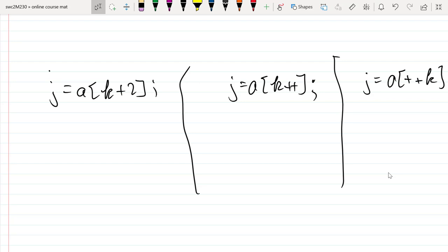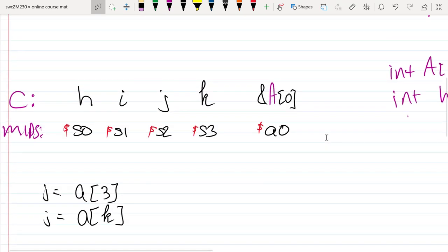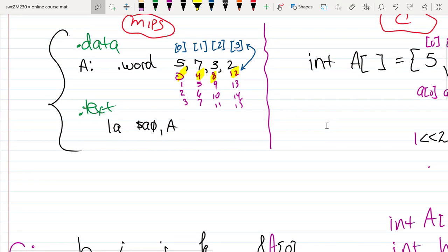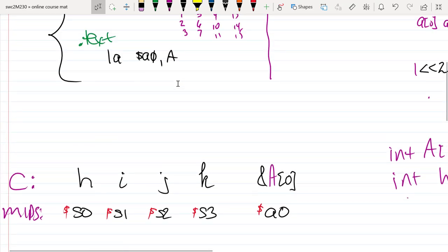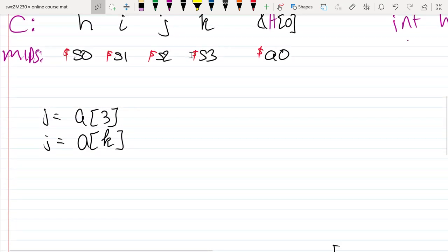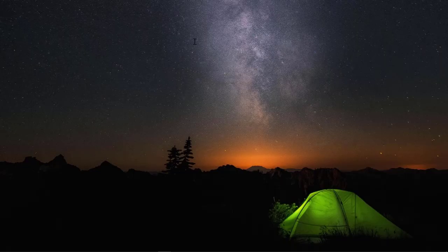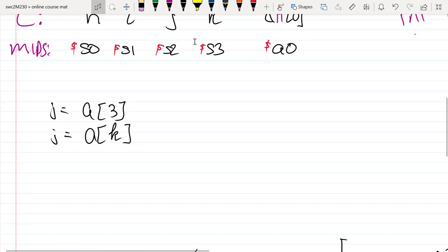Okay, so in the previous clip we did a quick review and reminded ourselves of what this data looks like in memory and why each element is four bytes apart. I'll let you go back and review that if you need to. Now we're going to do these conversions.